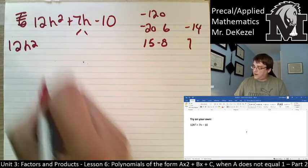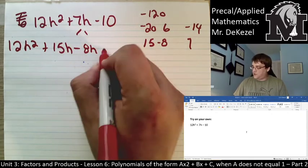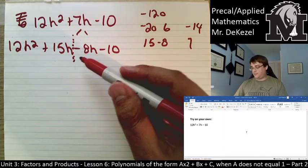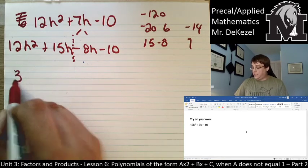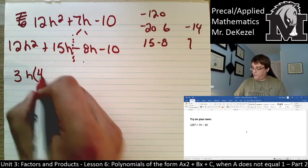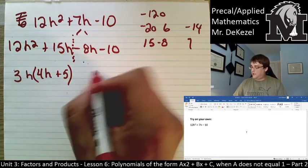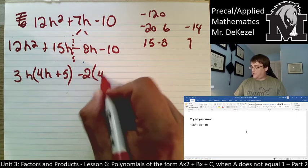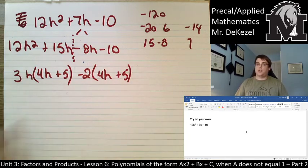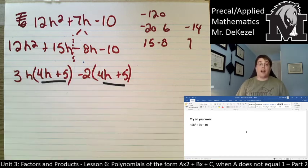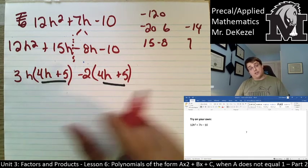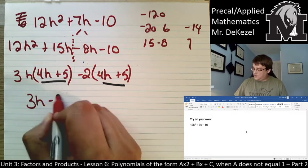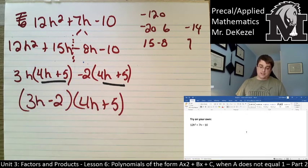So, I'm going to have 12h squared plus 15h minus 8h minus 10. I'm going to draw my line down the middle and I'm going to factor out a portion of each half. So, I can factor a 3h out of this part. I'd be left with 4h plus 5. And, out of the back half, I can factor a negative 2. I'd be left with 4h plus 5. And, I want to make sure that I have the same in each bracket. Because, if I do, I can then factor that out this way. I'm going to be left with 3h minus 2 in one bracket, and 4h plus 5.